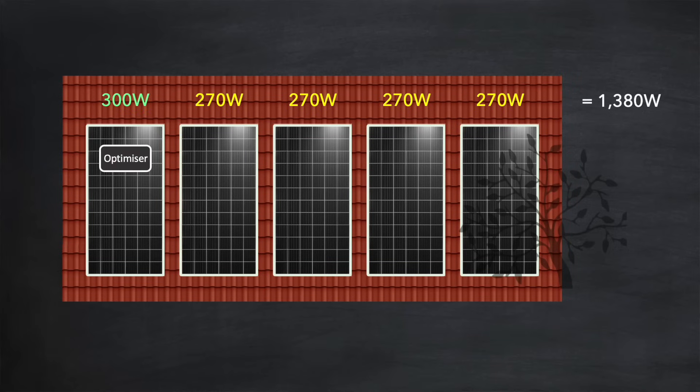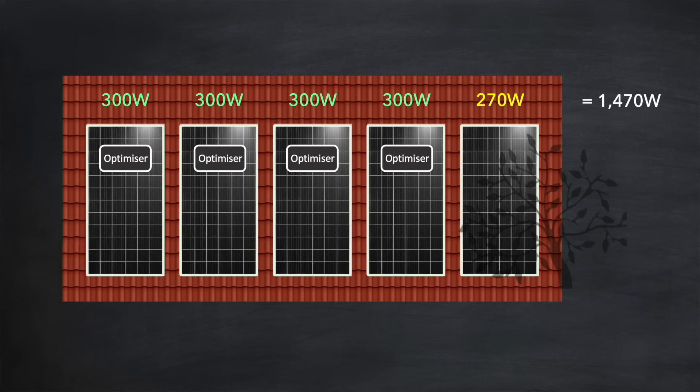Let's add an optimizer to each of the five panels in turn and see what happens. You can see that the first panel is now outputting at its maximum 300 watts again — and it's the same for the next three panels. Adding an optimizer to the last panel makes no difference in its power output; the shading on that panel is still reducing power by 10%, which is to be expected. But why is this shaded panel no longer affecting the other panels? To answer this, we need to delve a little deeper into how optimizers work — it's all about actively managing the voltage and current for each panel in isolation.